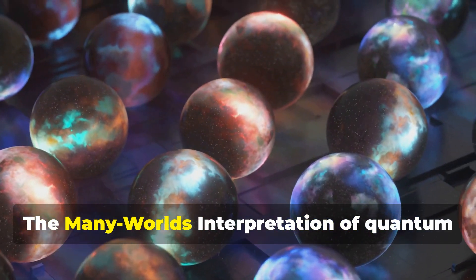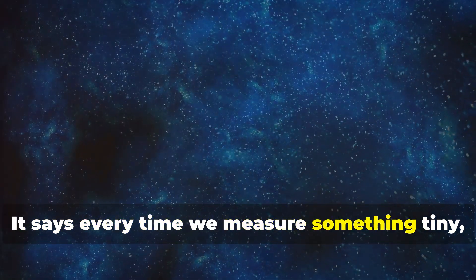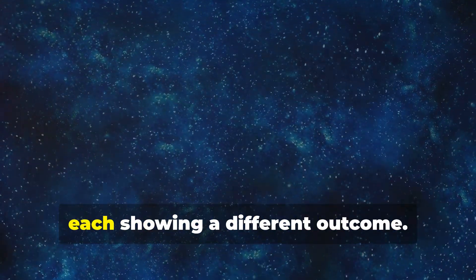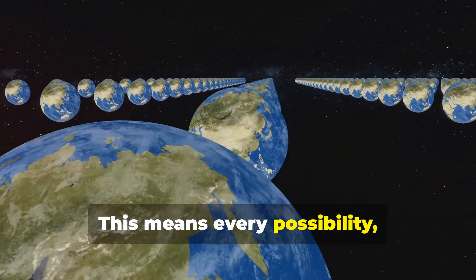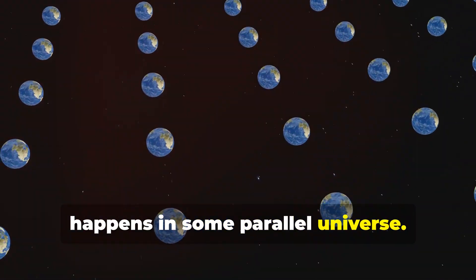The many worlds interpretation of quantum mechanics takes this further. It says every time we measure something tiny, the universe splits into different branches, each showing a different outcome. This means every possibility, no matter how unlikely, happens in some parallel universe.